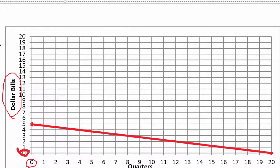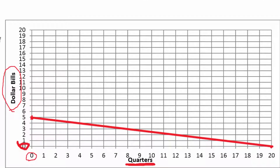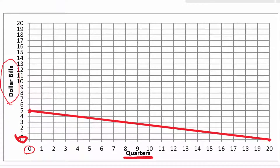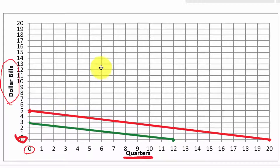What would happen to this budget line if instead of five dollars, we only had three dollars? Is the slope going to change, the y-intercept, or both? If we only have three dollars, then pulling out zero quarters gives us three dollar bills, and pulling out zero dollar bills gives us three times four — twelve quarters. Let's connect those two with a straight line. We see that the green line and the red line are parallel — the slope is the same. We calculate the slope as down three over twelve, giving minus one-quarter.